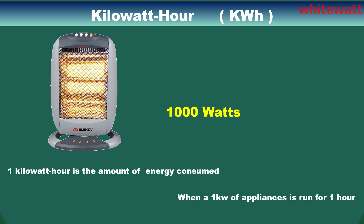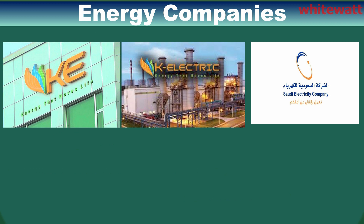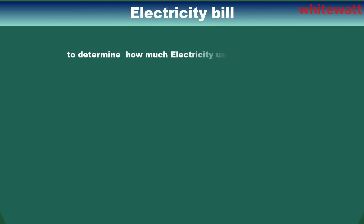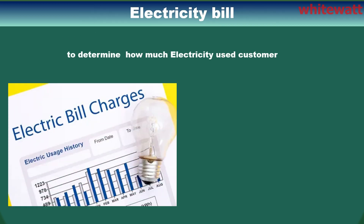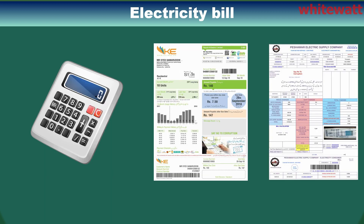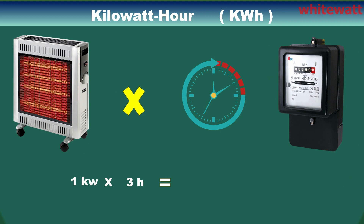runs for one hour. Energy companies commonly use kilowatt hours to determine how much electricity a customer has used and to calculate their bill. If you run a one kilowatt appliance for three hours, it will consume three kilowatt hours of energy.